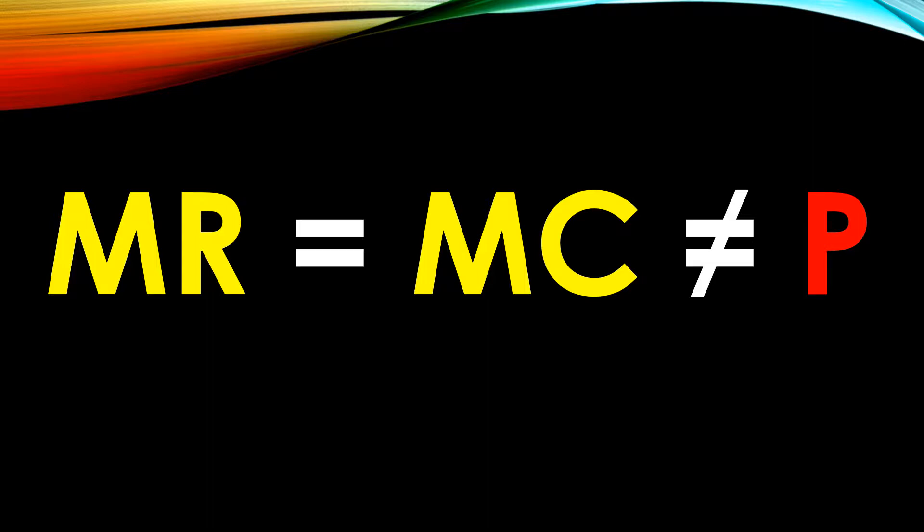A profit maximizing firm with market power will expand output as long as marginal revenue exceeds marginal cost, but price will be lowered and output expanded until marginal revenue equals marginal cost. However, price will not be lowered such that it equals marginal cost. The price charged by a firm with market power will be greater than its marginal cost.